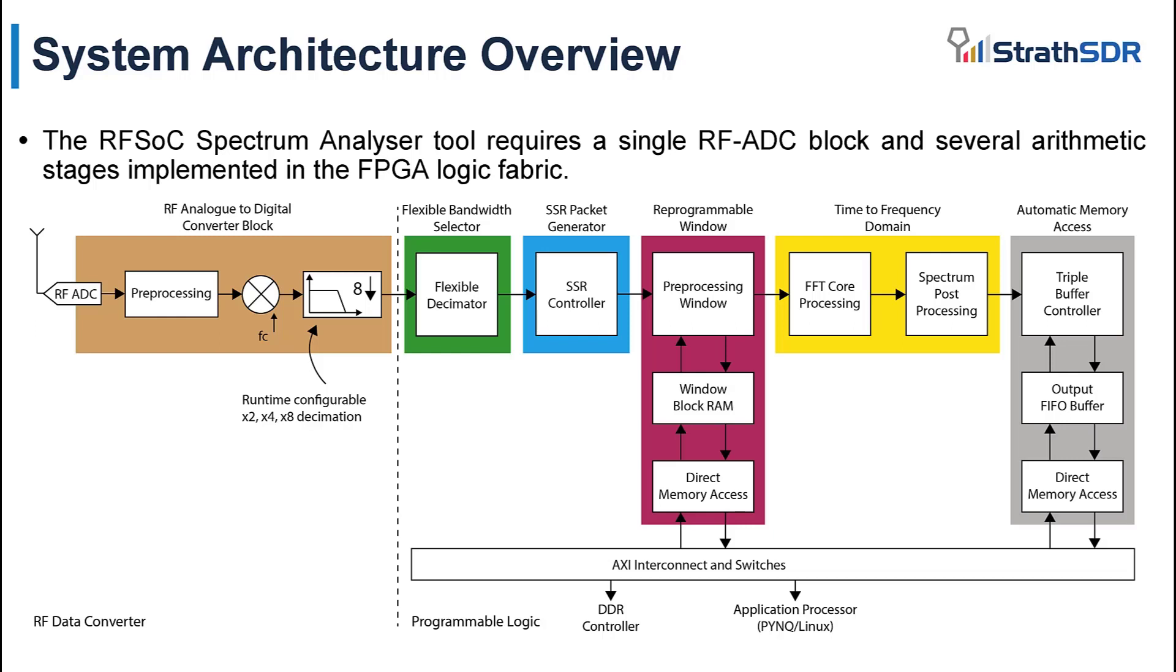The system implements a pre-processing window in the FPGA logic fabric. The pre-processing window is essential for suppressing unwanted frequency spurs and spectral leakage. The user can program the windowing architecture with traditional coefficients such as a Blackman or Hamming window. Custom coefficients can also be implemented.